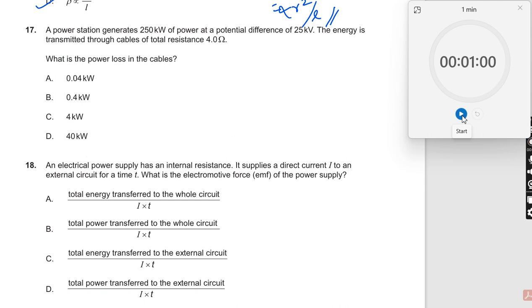Okay, let us move on to the 17th question. Start the timer. A power station generates 250 kilowatt power. Voltage is given to you. The energy is transmitted through cables. When power and voltage are given directly, you can find out the current.